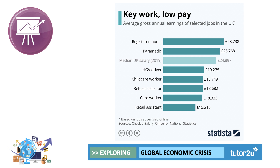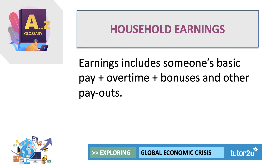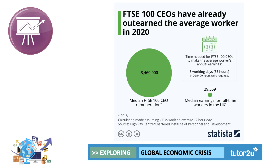What's the difference between earnings and pay? Your earnings include your basic pay - your monthly salary from your job - and you might also be eligible for overtime pay, perhaps working at weekends or in the evenings, a bonus at the end of the year, and occasionally other payouts if the employer chooses to make them. So earnings can be supplemented through bonuses and overtime.